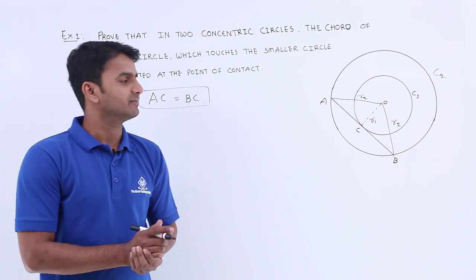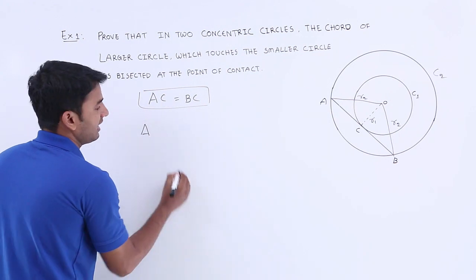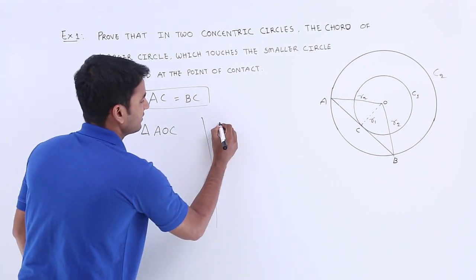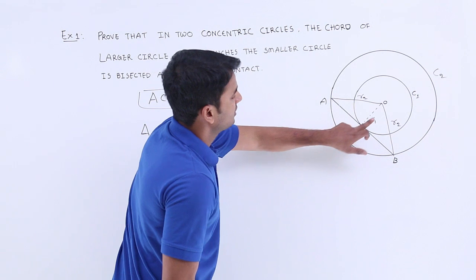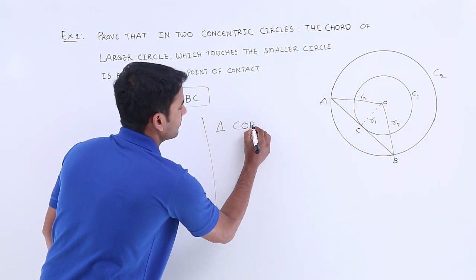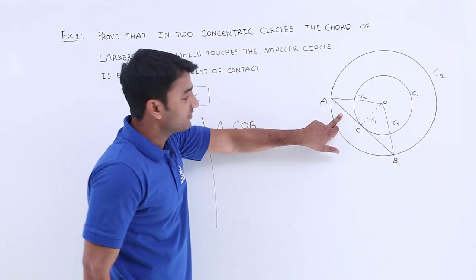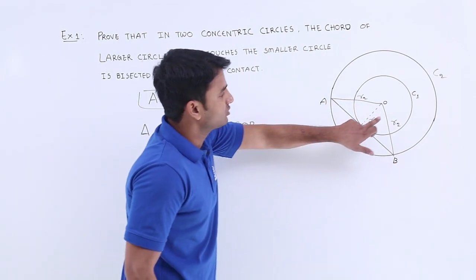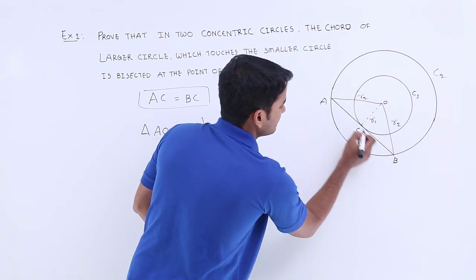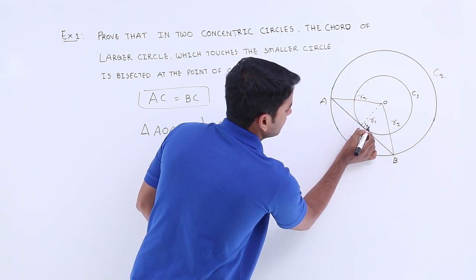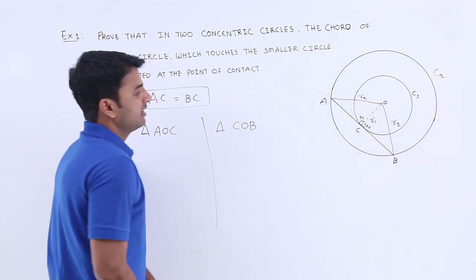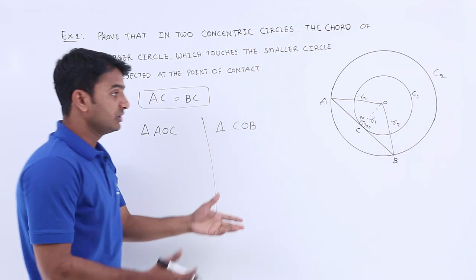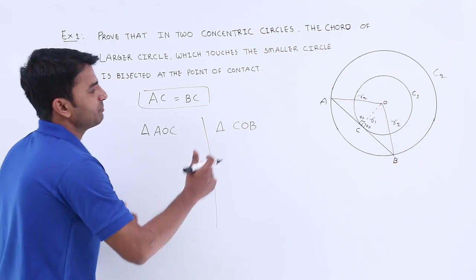We can prove AC equals BC using the Pythagorean theorem. We have two triangles: triangle AOC and triangle COB. The chord of the larger circle touches the smaller circle at only one point, meaning this chord is a tangent to circle C1. Since the radius is perpendicular to the tangent, the angle at C is 90 degrees on both sides, making both triangles right-angled triangles.